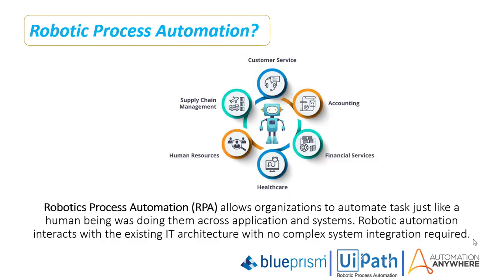Now we will see what is robotic process automation. RPA allows organizations to automate tasks just like a human being was doing them, across applications and systems. Robotic process automation interacts with the existing IT architecture with no complex system integration required.